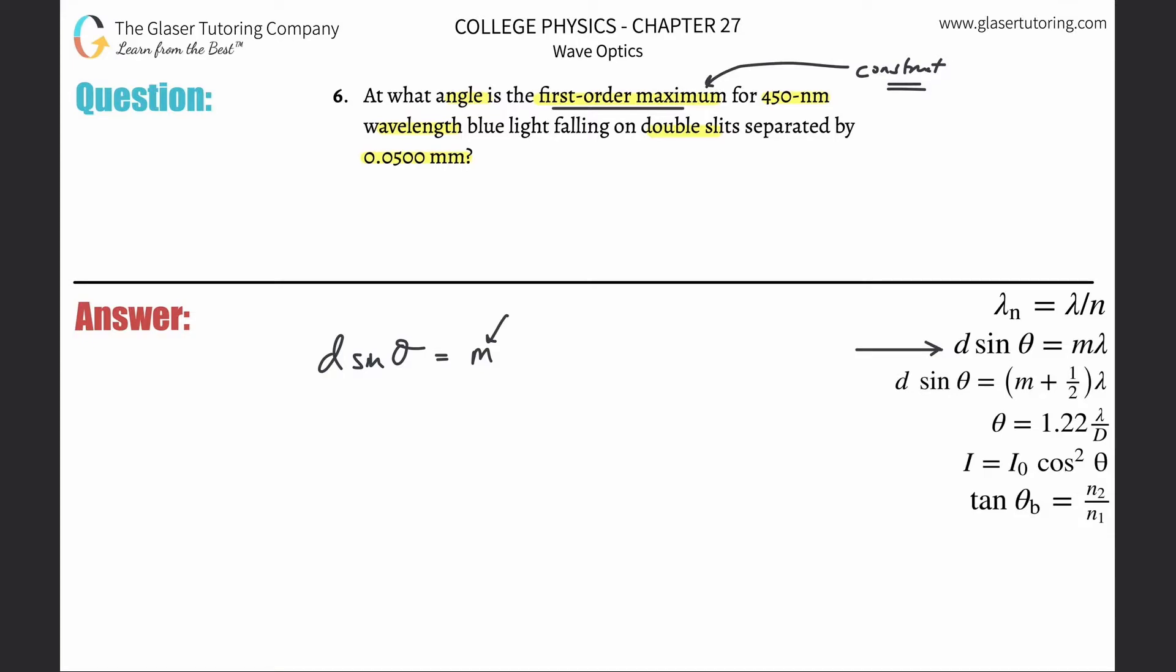In this case m, it's first order so m is going to be one, multiplied by the wavelength of that particular light. So to solve this for theta, just simply cross multiply the d, you've got to get rid of the sine on both sides, so you've got to take the inverse sine on both sides, and that would cancel this, and there's your theta.